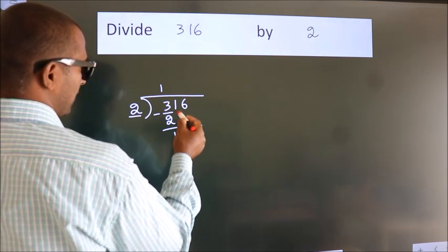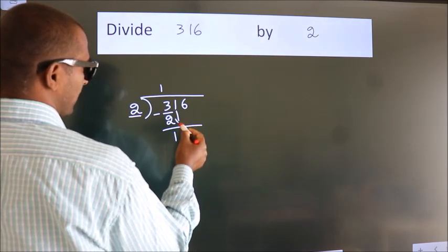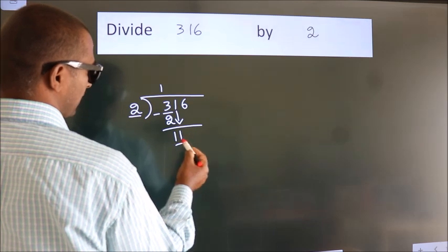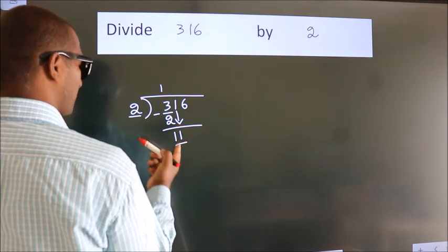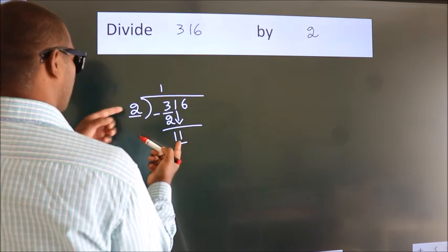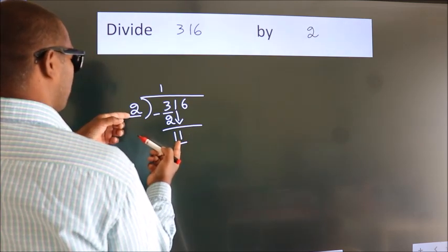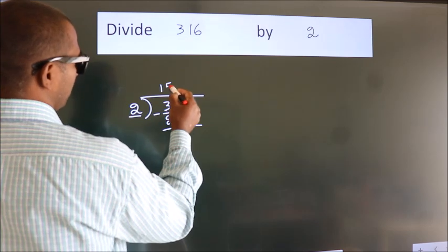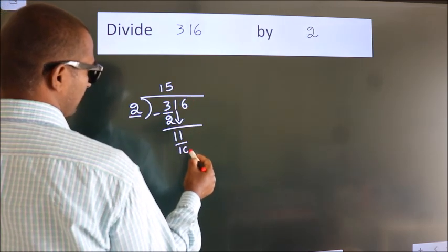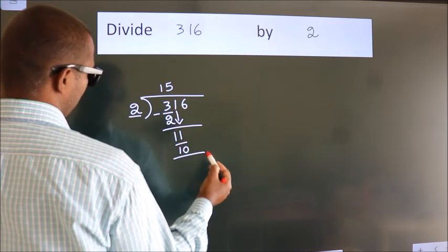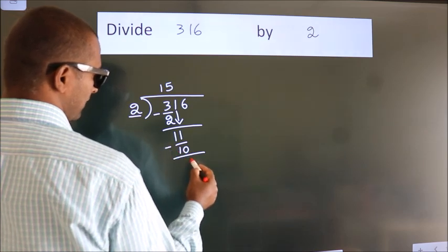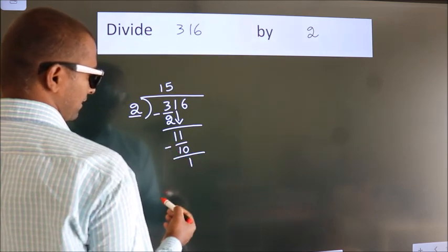After this, bring down the beside number. So, 1 down — so, 11. A number close to 11 in the 2 times table is 2 fives 10. Now we subtract. We get 1.